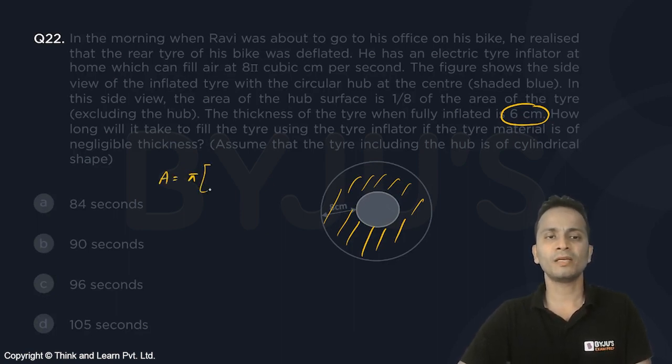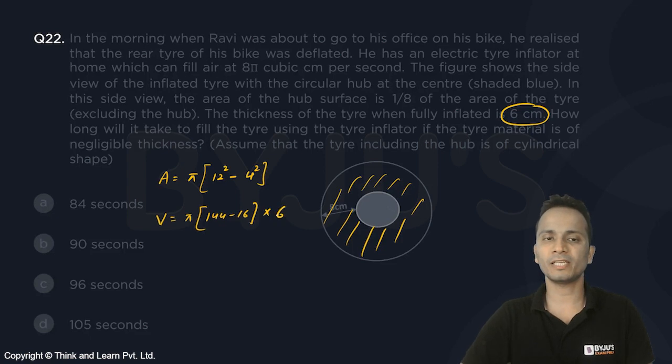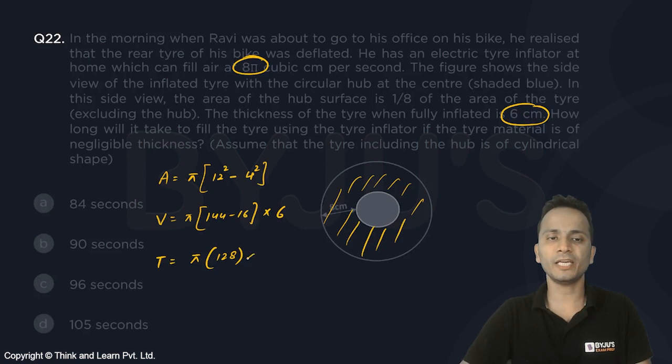So the area of this shaded portion I'll write as π outer radius 12 squared, so π r squared minus π 4 squared. This is the area, so volume will be π (144 minus 16) multiplied by the thickness, that is 6. Now the time taken will be the complete volume divided by 8π cubic centimeter per second. This is the rate of filling.